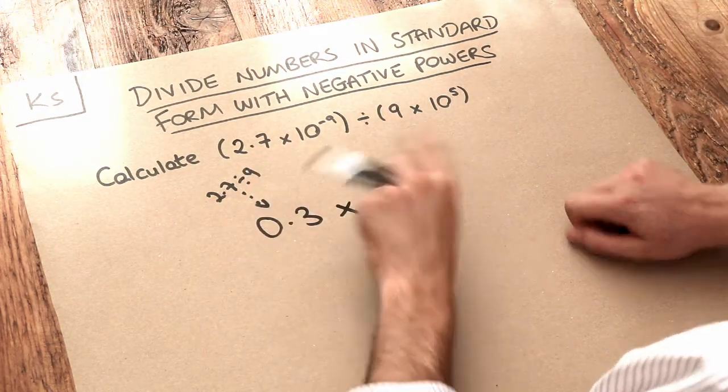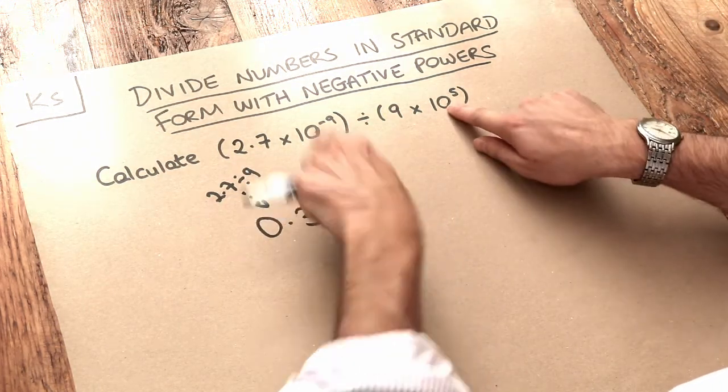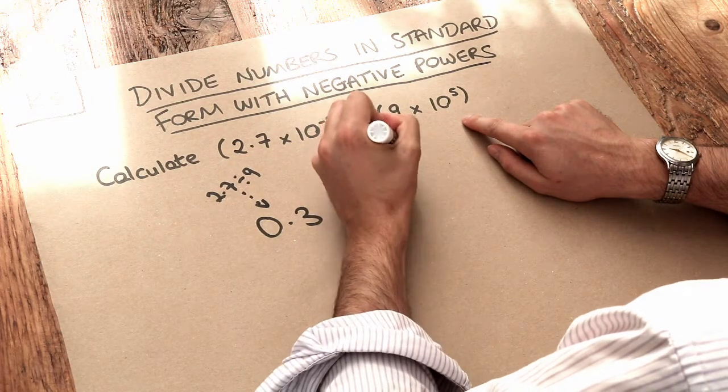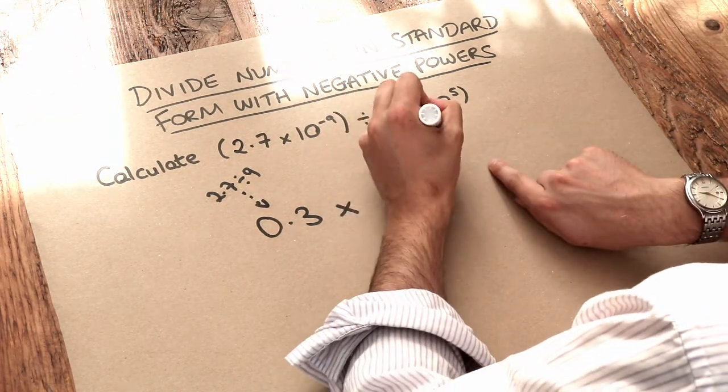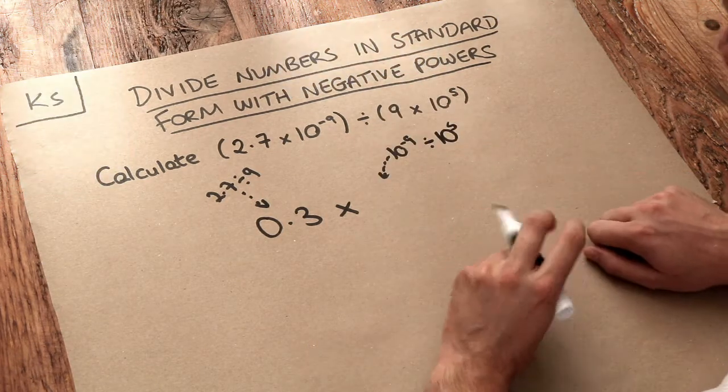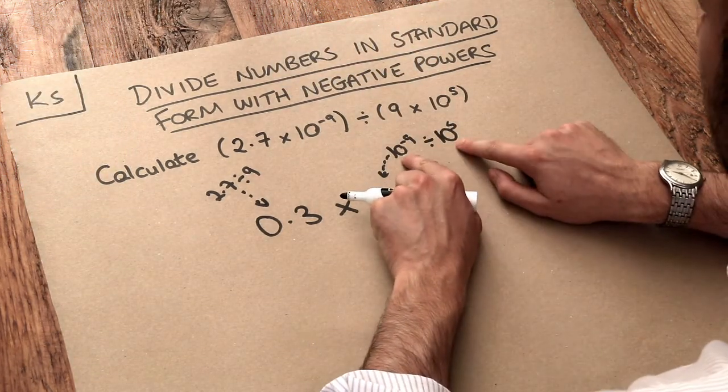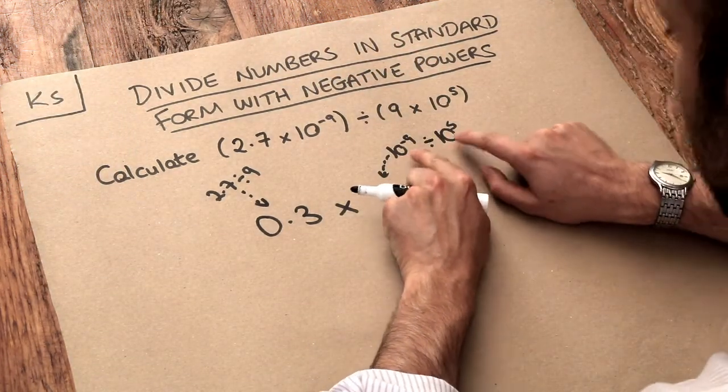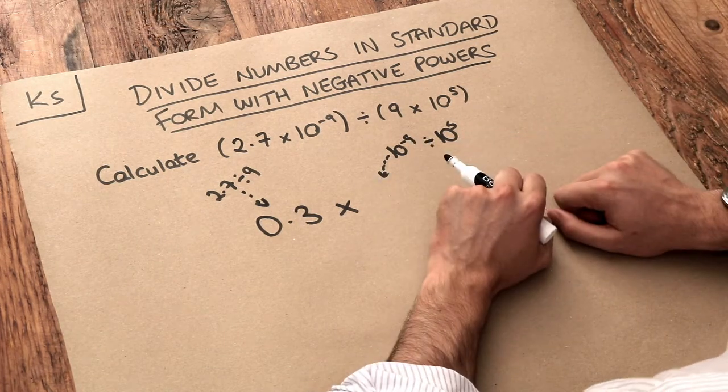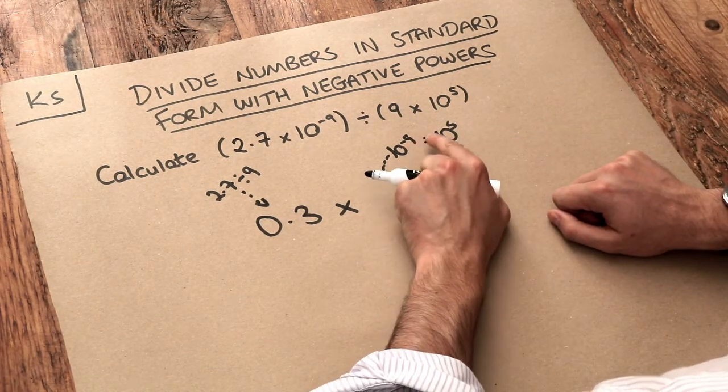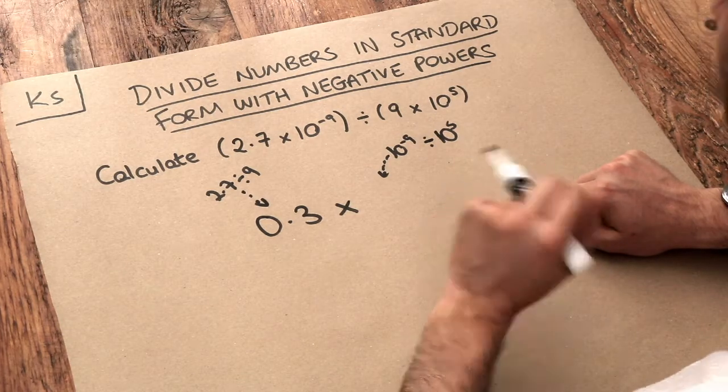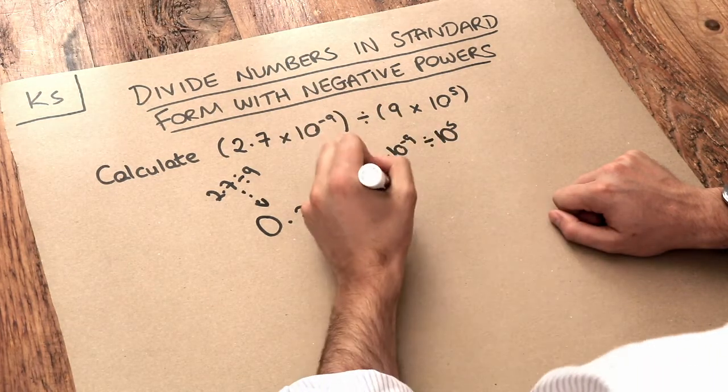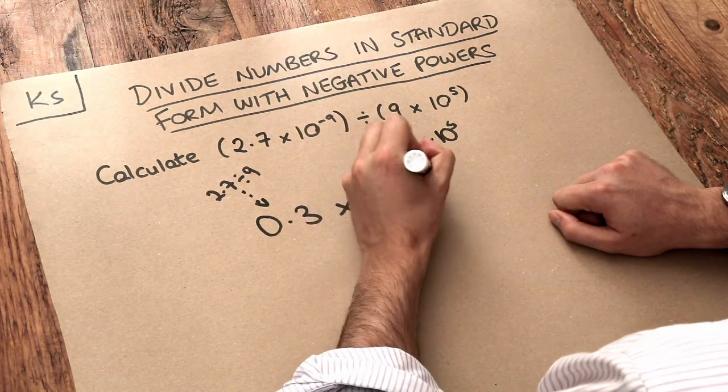And then we next divide the powers of 10. So we're going to do 10 to the minus 9 divided by 10 to the 5. And remember when we divide two powers with the same base of 10, we subtract the indices. So we're going to do minus 9 subtract 5. Now minus 9 subtract 5 is minus 14, so we get 10 to the minus 14.